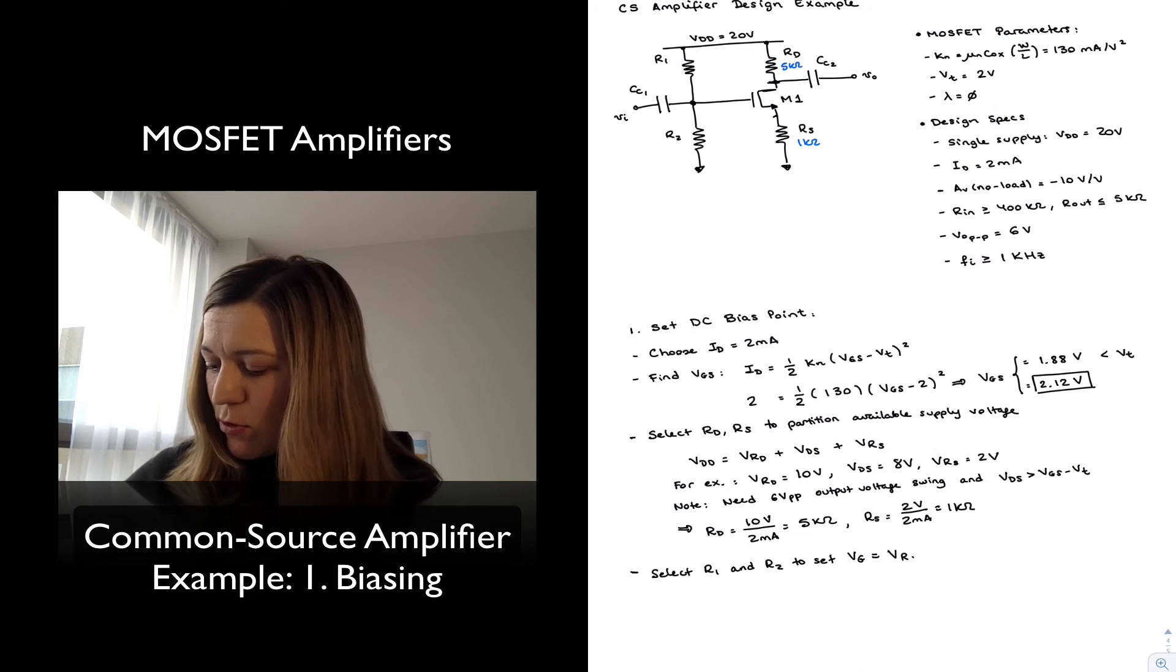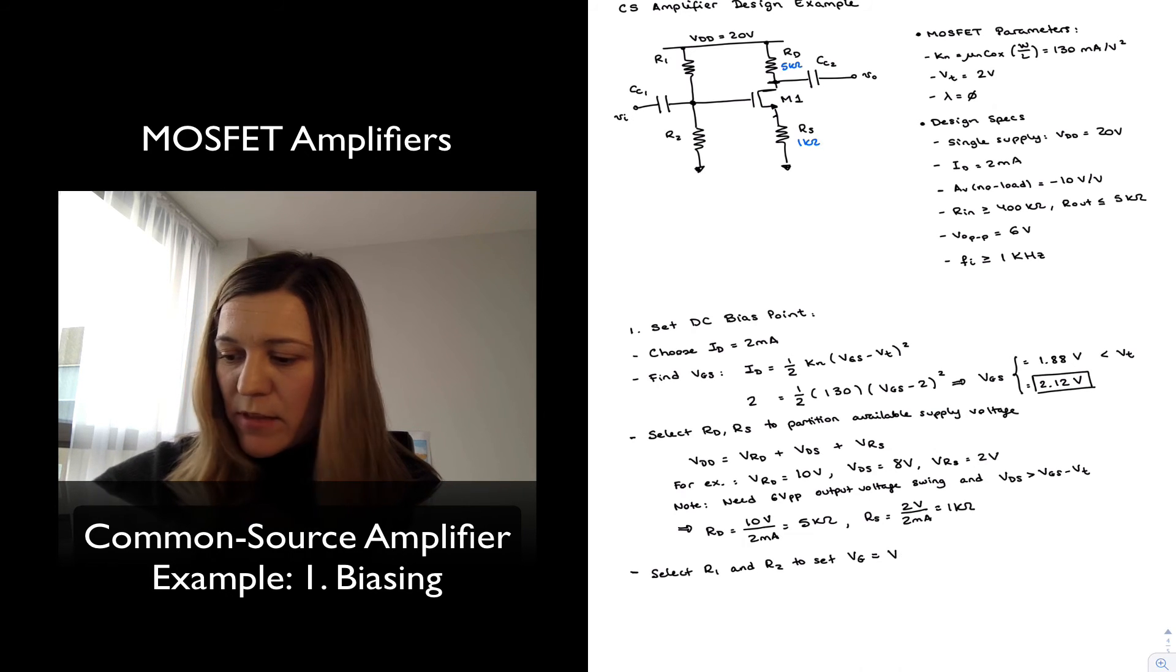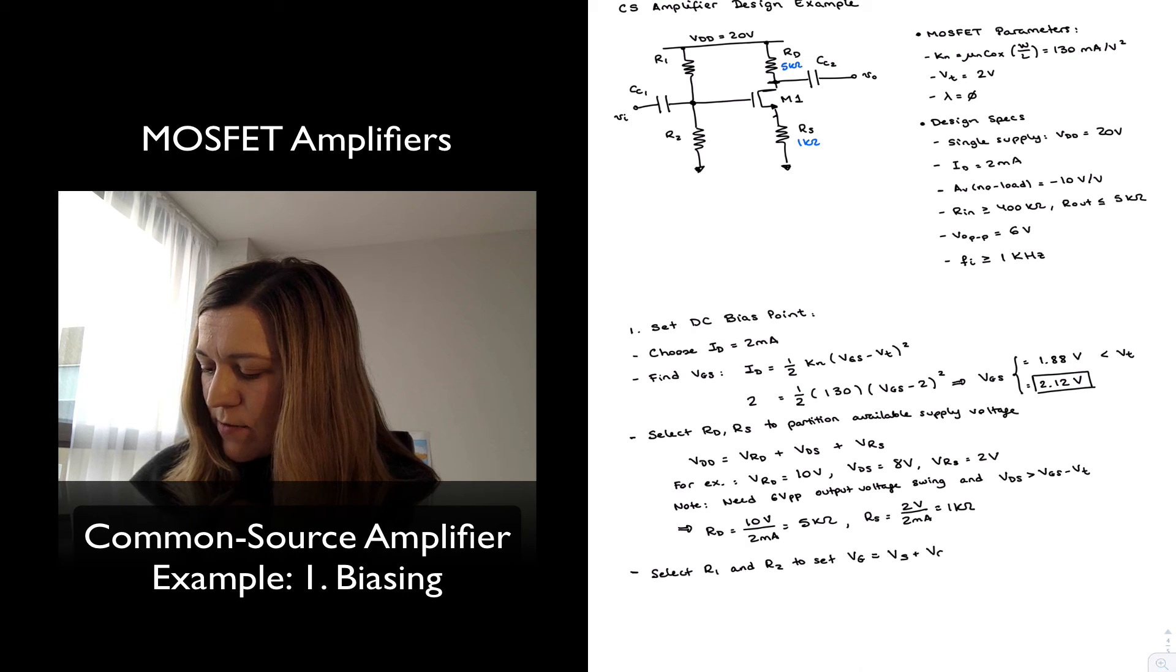So VG needs to be equal to VRS, or VS I should say, the voltage at the source—they're the same thing—but VS plus VGS.